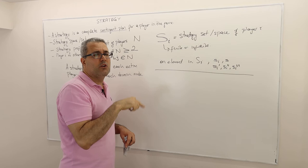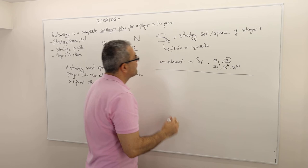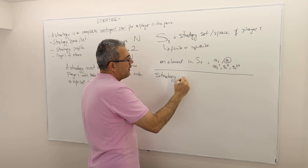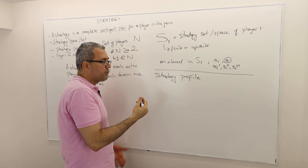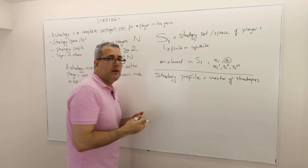We usually put i in order to denote that it is the strategy of the player, but sometimes we may ignore the subscript i, but not much. Well, what about strategy profile?